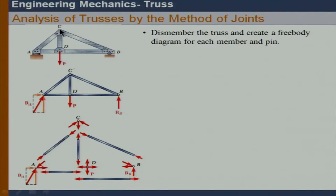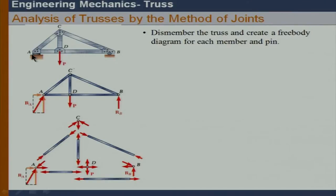In the method of joints, we have the applied load and reactions. Since it is a simple truss, it is internally rigid — meaning we can assume the entire truss is a rigid body. We need not worry about the internal member connections. Therefore, we can calculate the reactions by considering the entire truss as a rigid body, and we should be able to solve for the reactions first. Then we create free body diagrams for each member and pin.